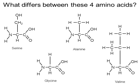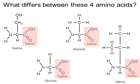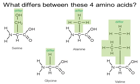Here are four of the 20 amino acids that exist: serine, glycine, alanine, and valine. What differs between these four amino acids? Notice they each have an NH2 amino group — that's the same. They each have a carboxyl group — that's the same. What makes these four different is their R group, highlighted here in green.